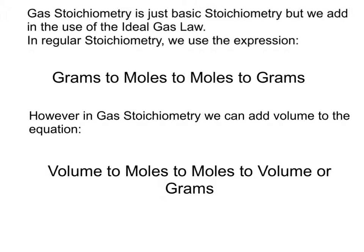In regular stoichiometry, we use the expression grams to moles, moles to moles, moles to grams. However, in gas stoichiometry, we can add volume to the equation. So we can figure out what the volume is and turn it into moles, then use our balanced chemical equation and go moles to moles, and then we can either turn it back into volume or turn it into grams, depending on what the question asks for.